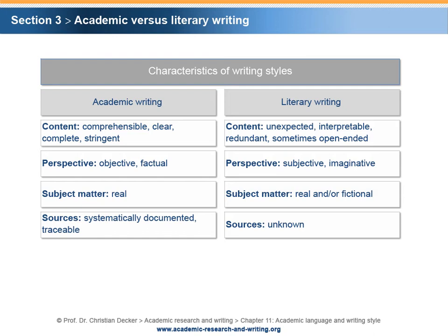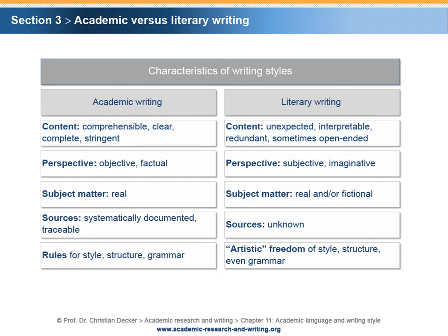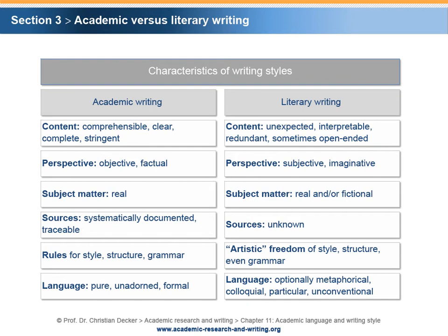Whereas literary writing does not state its source of information and inspiration, or at least not in a systematic way. Literary writing is characterized by total freedom in writing style, text structure, and sometimes grammar. Whereas in contrast, academic writing should strictly observe the rules and norms of scientific structuring and language. Consequently, the academic piece is characterized by a pure, unadorned, and formal language, whereas literary writing can use every kind of language, metaphorical descriptions and expressions, colloquial speech, etc. Note that there are research-based publications that address a broad public beyond the research community. These are typically presented in a mix of academic and literary writing — an approach called popular science — and considered inappropriate in scientific work.